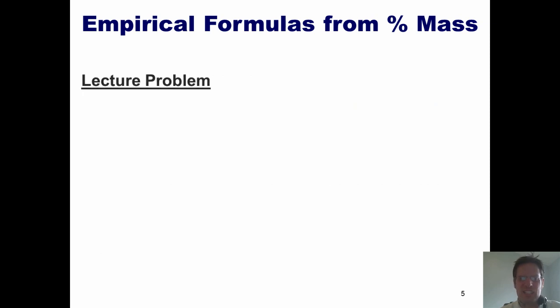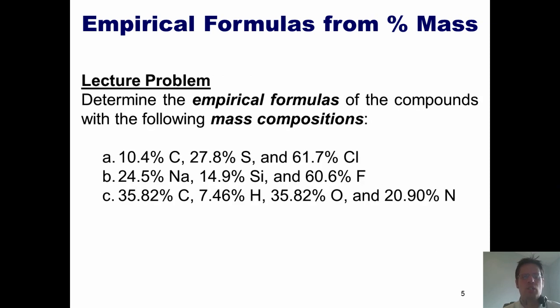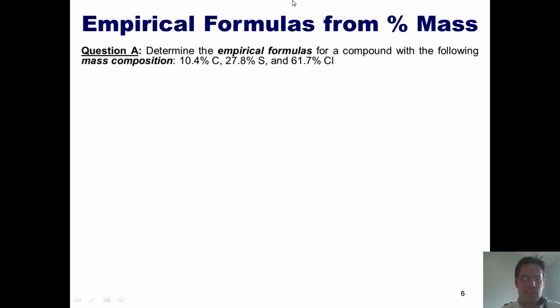We'll now take a look at a lecture problem to see if we can get this down. Determine the empirical formulas of the compounds with the following mass compositions. Now, I'm going to go ahead and do two of these for you and let you tackle the third on your own. First example says, we've got mass composition 10.4% carbon, 27.8% sulfur, and 61.7% chlorine. What's the empirical formula?